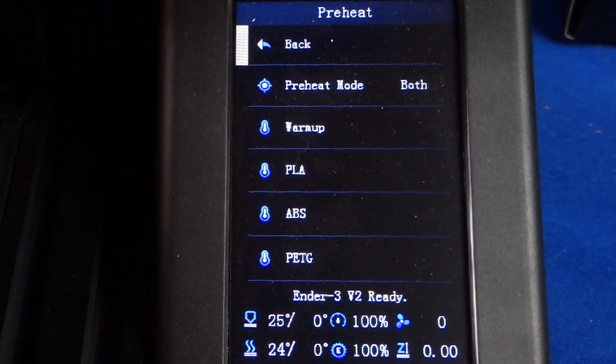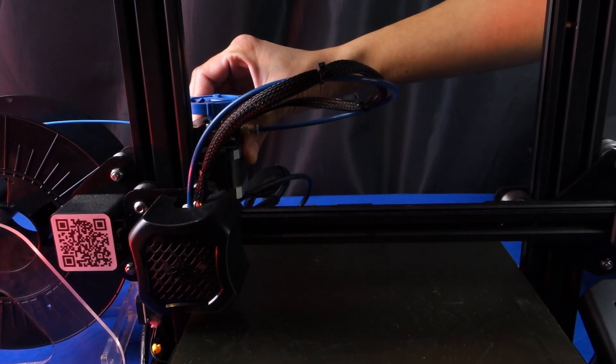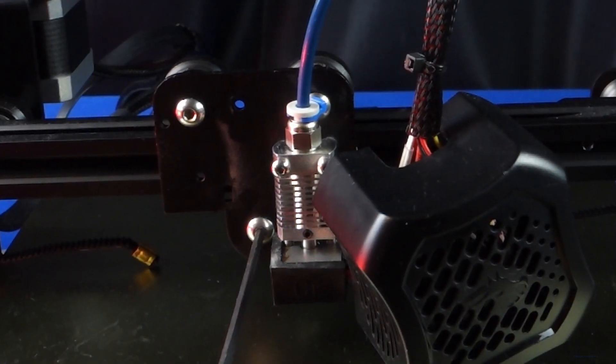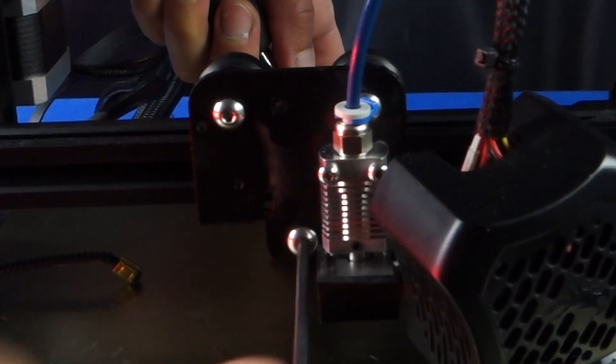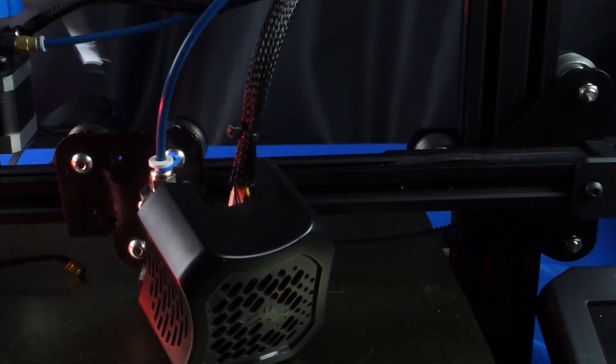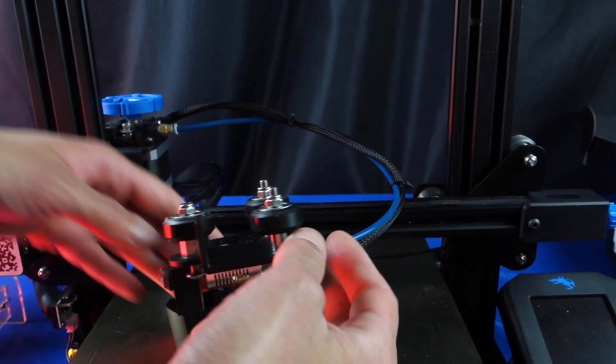Before beginning the installation of our direct extruder we will first need to preheat the nozzle for the machine and remove any filament which is currently loaded within. To remove the hotend assembly that's on the printer we will remove the bottom screw. To do this we have to remove the hotend cover and use a wrench to hold the nut in place. Once it's been loosened enough you should be able to wiggle off the extruder assembly and replace it with the new one.